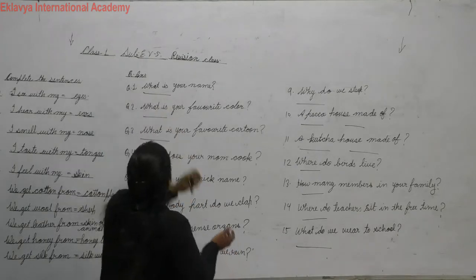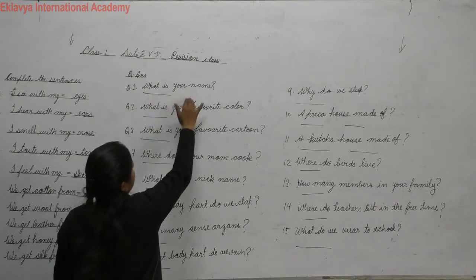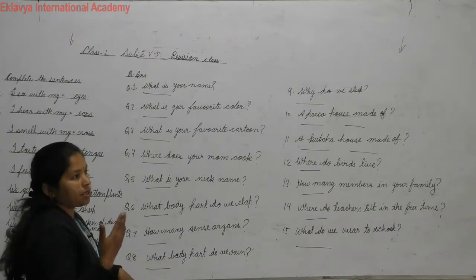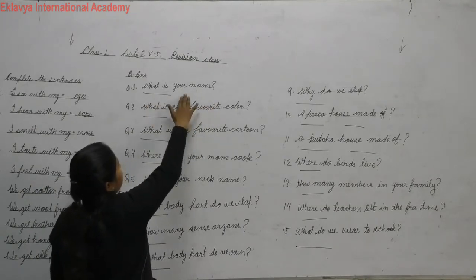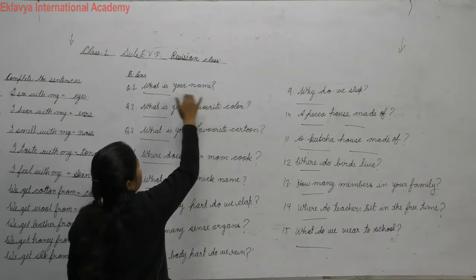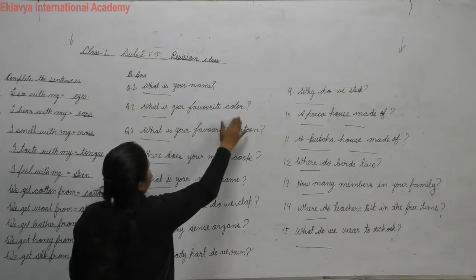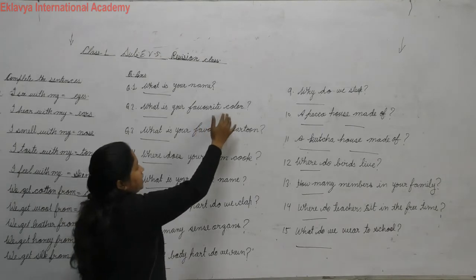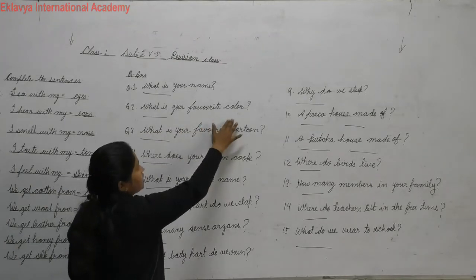Now question and answer. Read the question and answer. What is your name? Write your name there — my name is Ram, or my name is Mohan, or with your surname: my name is Ram Sharma. Whatever your surname is, write your full name. My favorite color is red or green — write whichever color is your favorite.